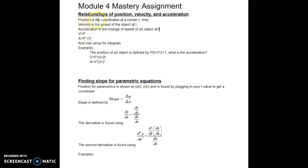So first to determine the relationships of position, velocity, and acceleration you need to define them. Position is the coordinates at a certain time. Velocity is the speed of an object at t. And acceleration is the change in speed of an object at t.